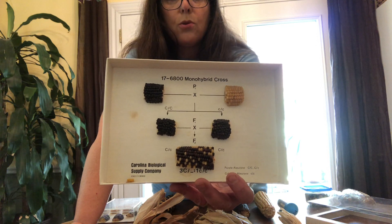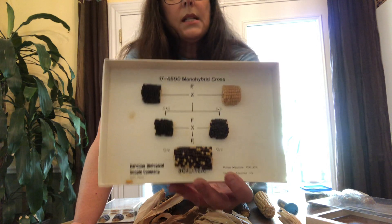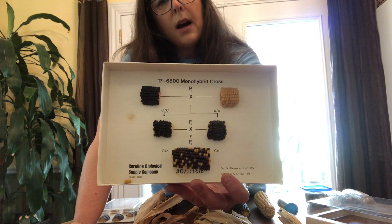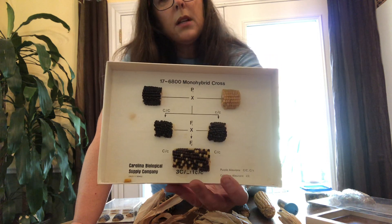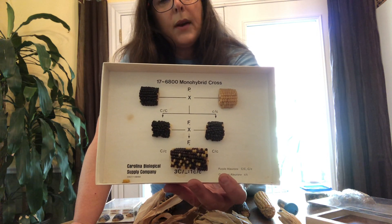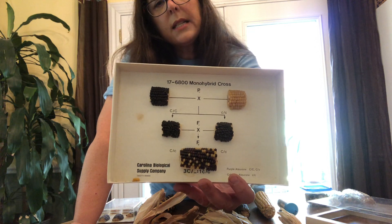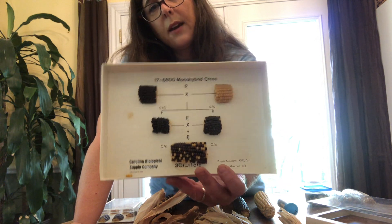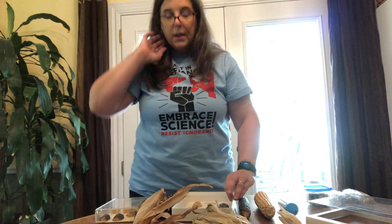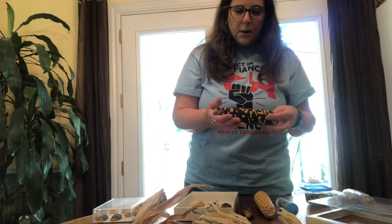Then we take the pigmented hybrids, cross those, and get our F2 generation, which you can see is a nice mix of both pigmented and non-pigmented kernels. If you counted them, you'd see it's closer to a three-to-one ratio, because this is a monohybrid cross. In this lab, we're taking the results of that F2 generation and counting the kernels to see if they do in fact follow that three-to-one ratio.